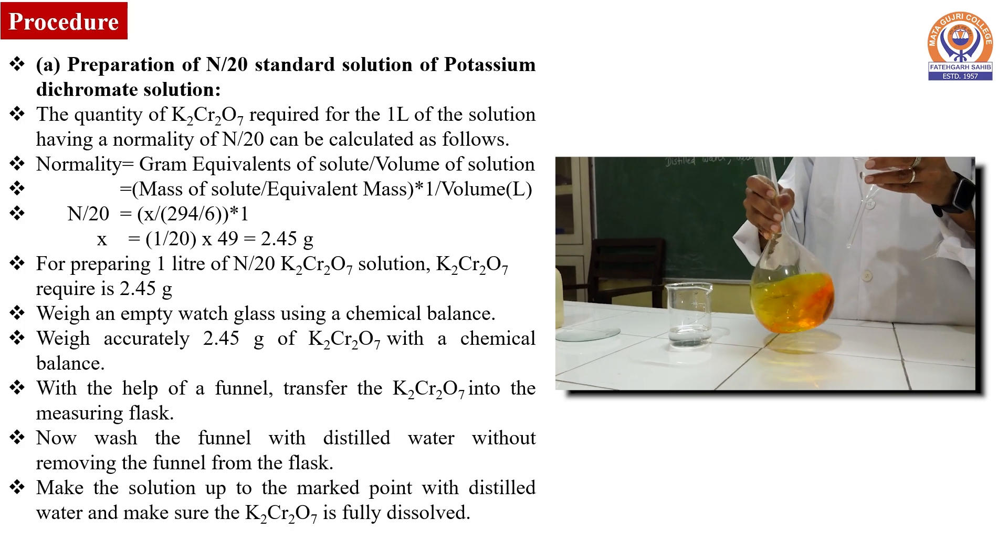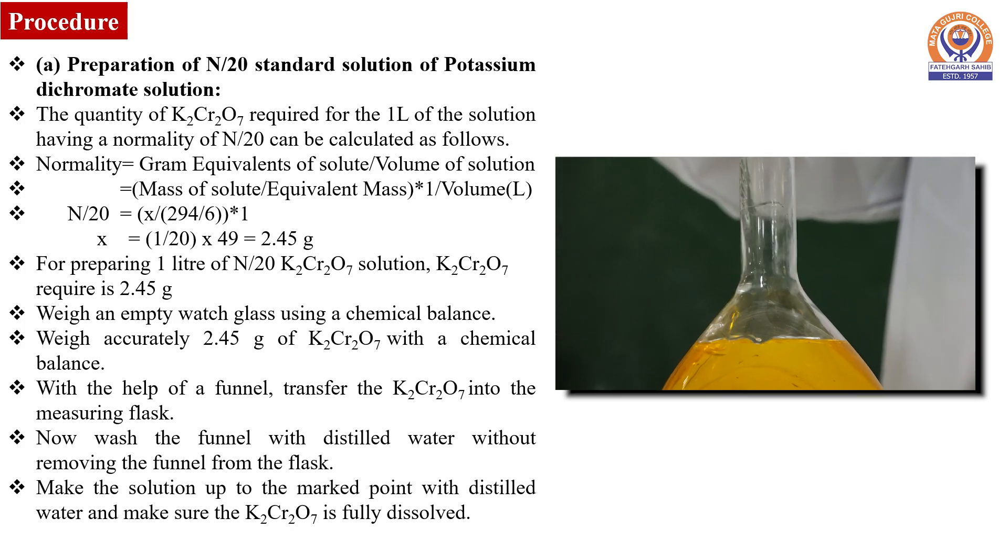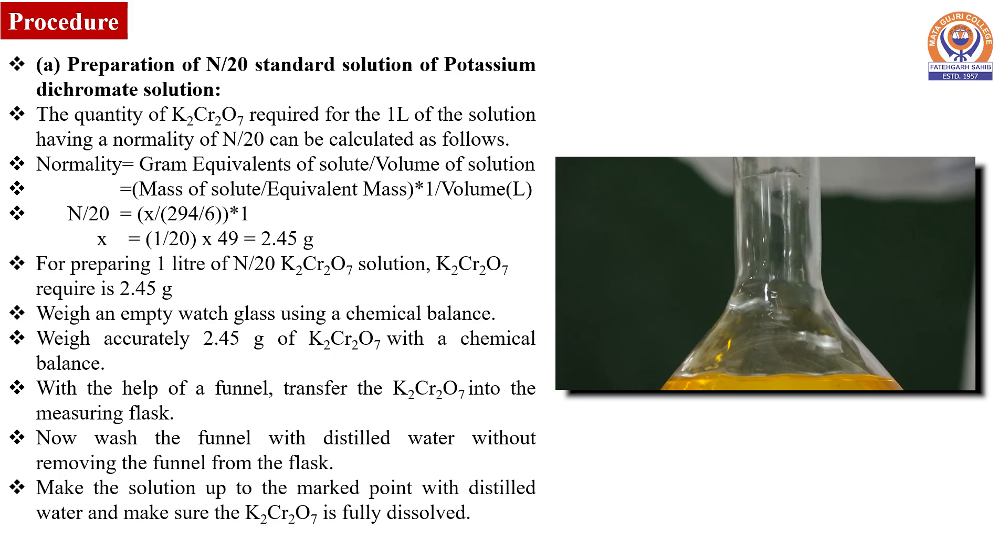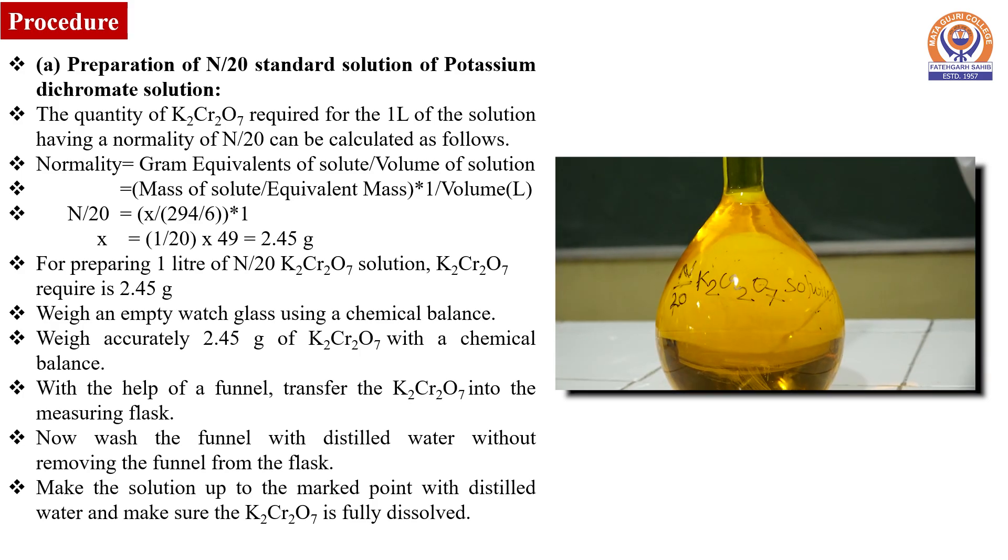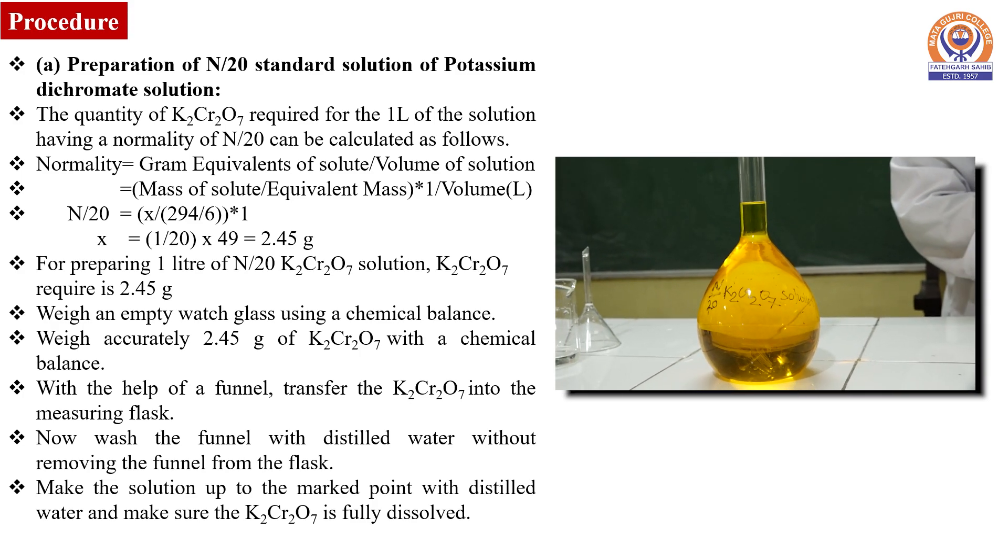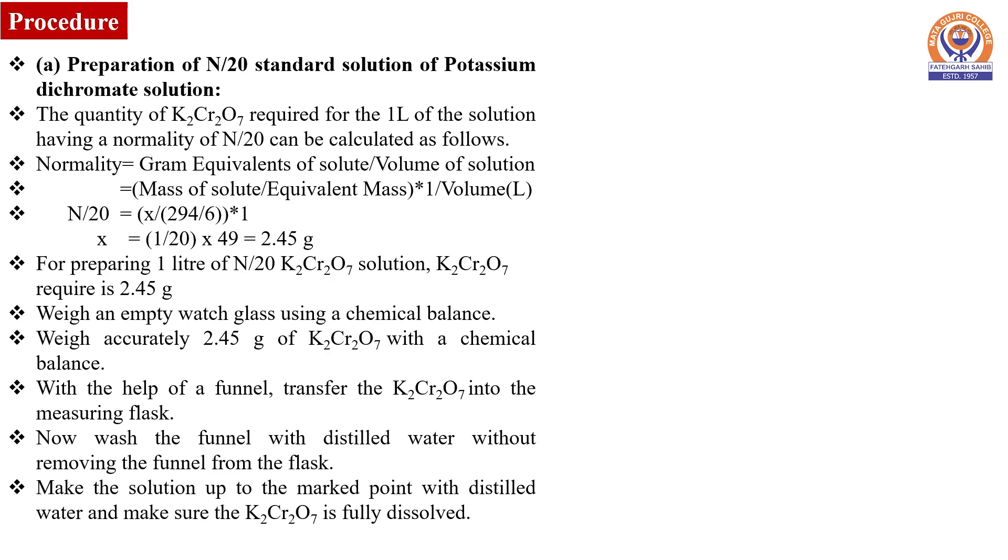Make the solution up to the marked point with distilled water. Shake the solution to make sure that potassium dichromate is fully dissolved. The solution is labeled as N/20 standard solution of potassium dichromate.